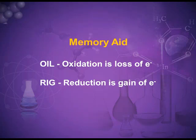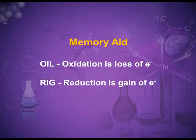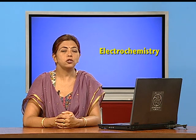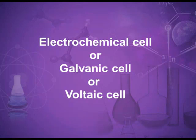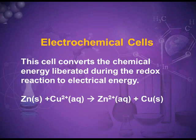To remember this, here is a memory aid: OIL RIG — OIL means Oxidation Is Loss of electrons, and RIG means Reduction Is Gain of electrons. As I mentioned, the redox reaction is the basis of an electrochemical cell, also known as a galvanic cell or a voltaic cell. This cell converts the chemical energy liberated during a redox reaction to electrical energy, as in the zinc-copper cell example.